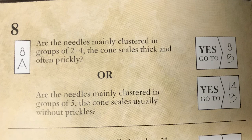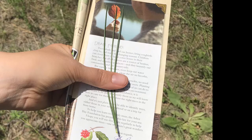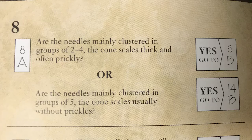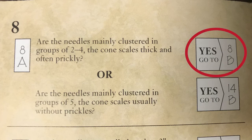8A: Are the needles mainly clustered in groups of 2 to 4, the cone scales thick and often prickly? Or are the needles mainly clustered in groups of 5, the cone scales usually without prickles? We can see that these needles are in groups of 3.